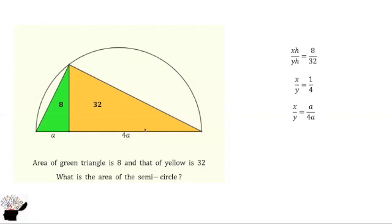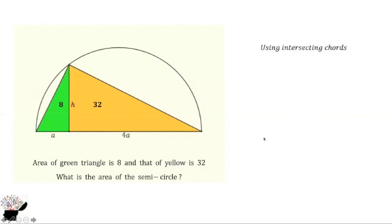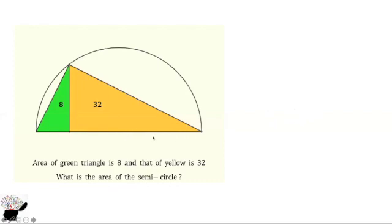Now we are going to find the actual bases. By using the intersecting chords theorem, we get 4A multiplied by A equals H squared. So we need to find H in terms of A. We get H squared equals 4A squared, which gives us H equals 2A. Now we have everything in terms of A, so using either triangle we should be able to find A and then the area of the semi-circle.